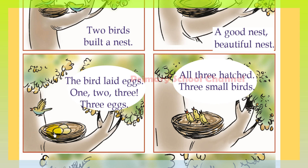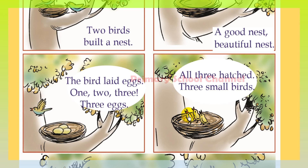You count: 1, 2, 3 — three eggs. All three hatched. All three eggs hatched. One, two, three. How many small birds are here? Three small birds — one, two, three.